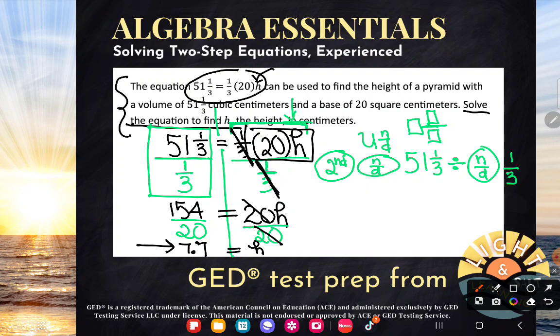But since I answered in words, let's go ahead and do our answer in words. So it says solve the equation to find h the height in centimeters. Okay. So this h is the height. So basically my answer here is that the height is 7.7 centimeters. Nice.